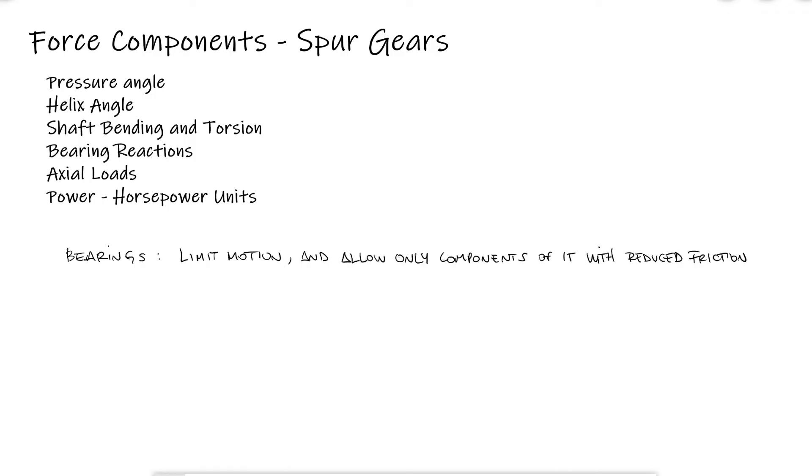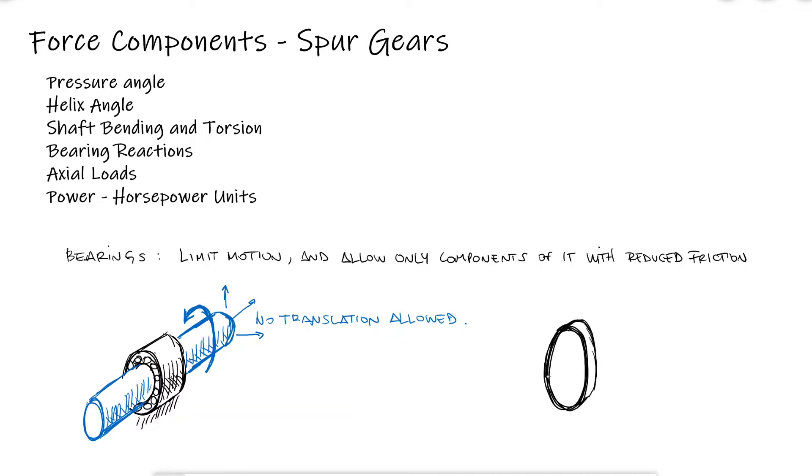In the case of shaft and gear systems, the bearings will allow the shaft to rotate with little losses of energy while restricting their translation in any orthogonal axis. What we'll do today is find the components of the interaction forces between gears, some of which are transferring the torque and therefore power through the system, and some of which are trying to push the shaft. Of course, the shaft stays in place because of its interaction with the bearings.